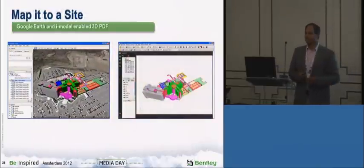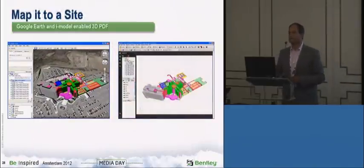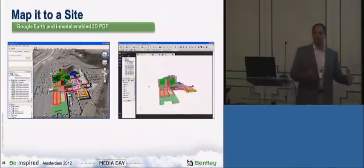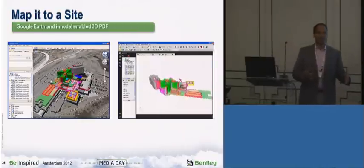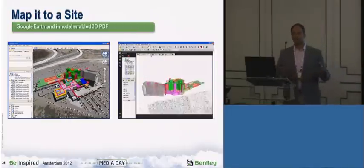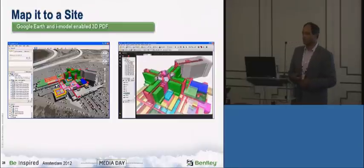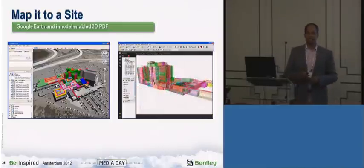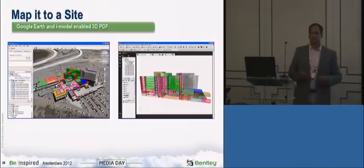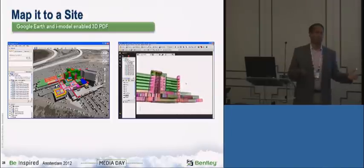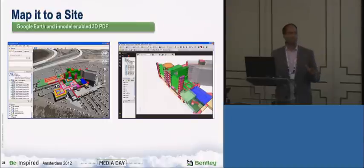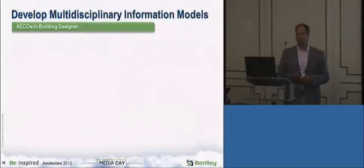As you can see in these animations, you can geolocate the massing model onto Google Earth — put it on a prospective site and see what characteristics or adjacency problems you may have. You can also send this out as an iModel or as a PDF, sharing it with others who may not have Bentley applications. Very portable — information mobility is extremely important.